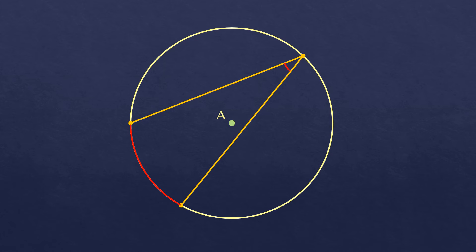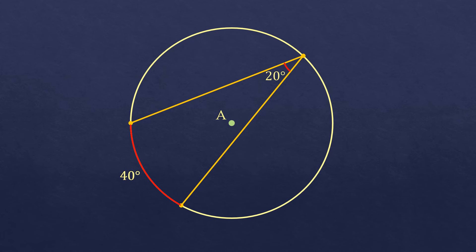In this case, the inscribed angle is only half the measure of the intercepted arc. So for example, if the intercepted arc of the inscribed angle measures 40 degrees, then the inscribed angle measures 20 degrees — because it's only half of the measure of its intercepted arc.